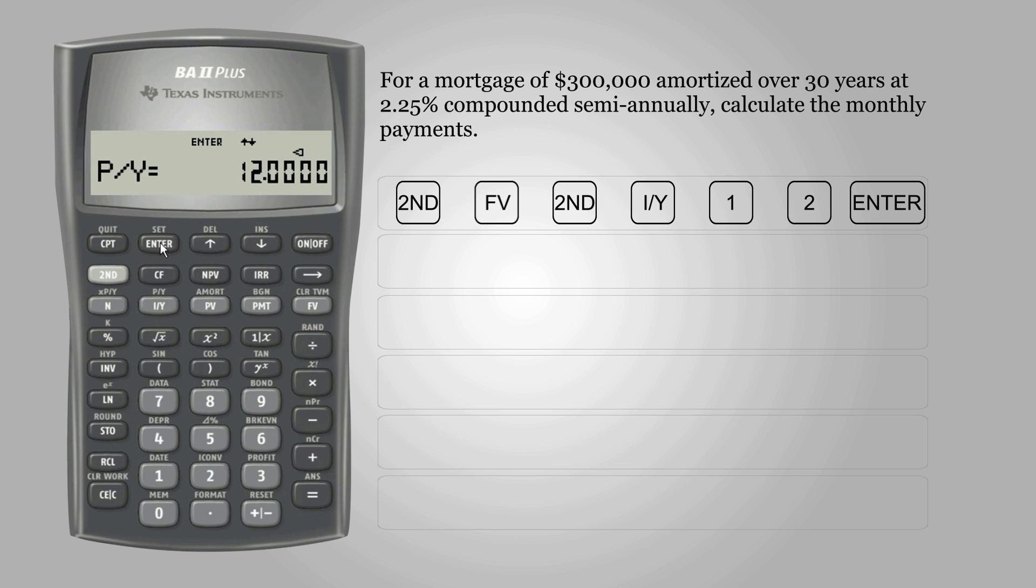For CY, press the downward arrow. Now note that the number of interest periods is 2, since the question asks for semi-annually, so press 2 and enter. Press C and C again to exit.